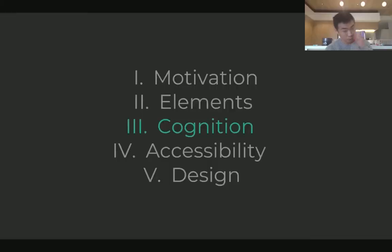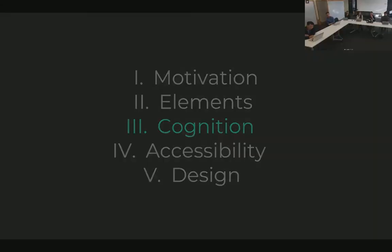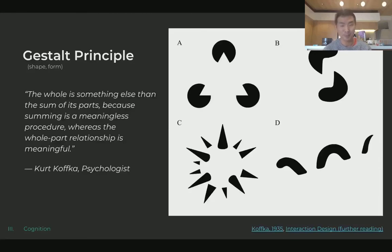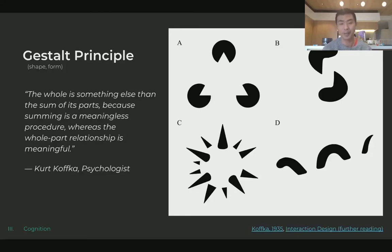On to the third section on cognition — let's talk about how people understand things. A psychologist named Kofka, along with four or five colleagues in Germany back in the 1930s, came up with the Gestalt Principle. People are really good at looking for things that aren't there. What Kofka stressed is that the whole — the picture together — is something other than the sum of its parts.